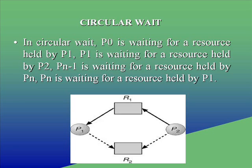Circular Wait: in circular wait, P0 is waiting for a resource held by P1, P1 is waiting for a resource held by P2, and PN-1 is waiting for a resource held by P0.